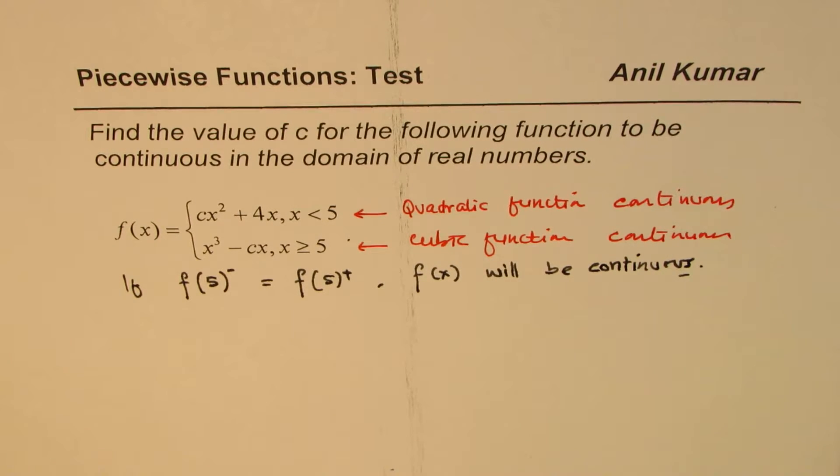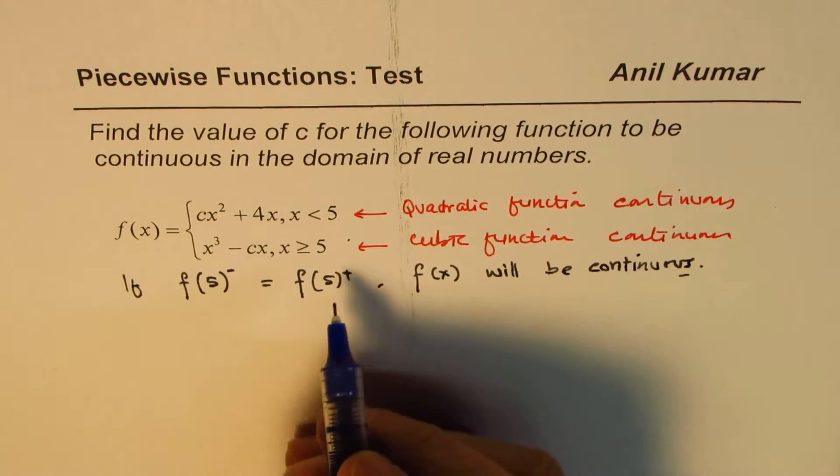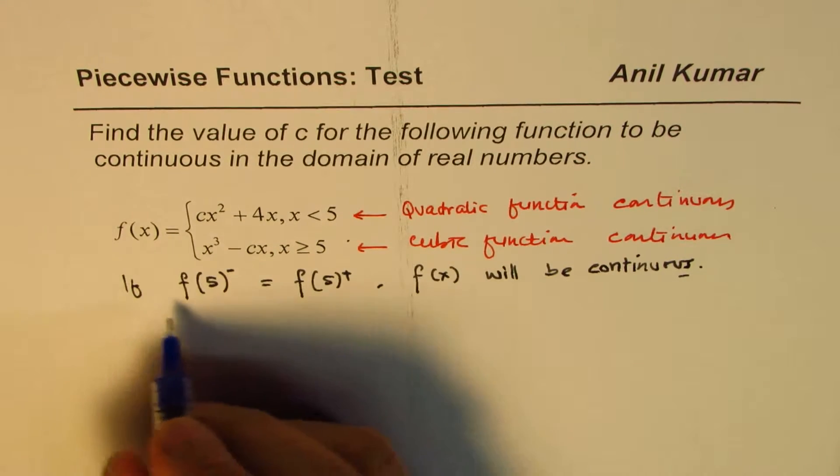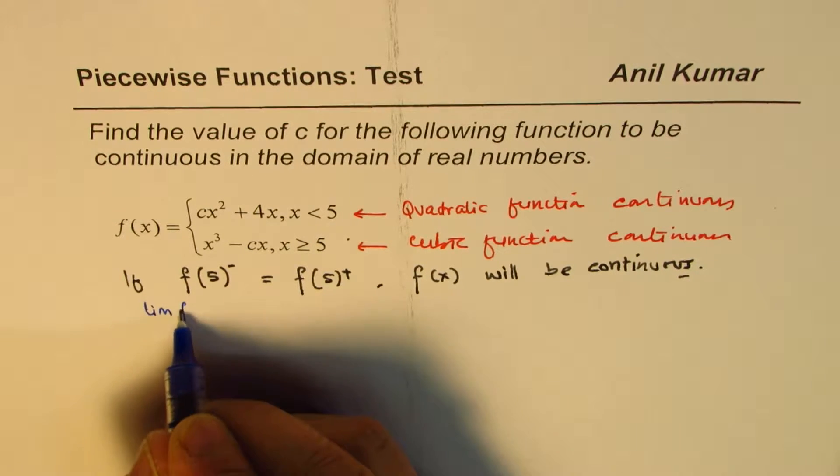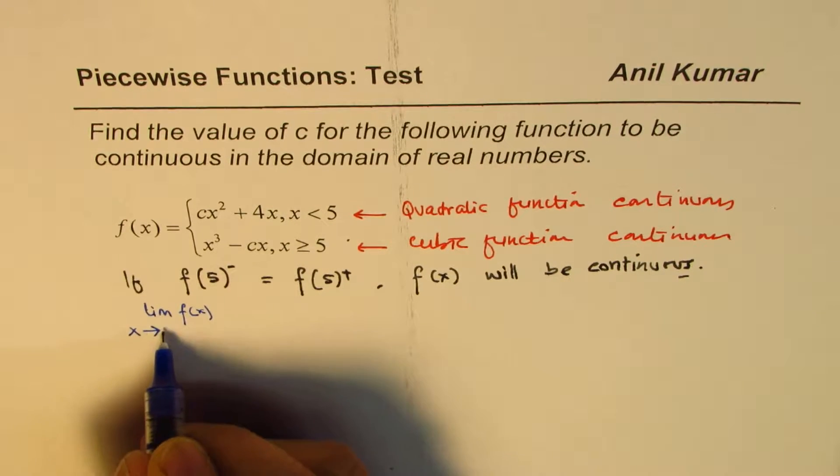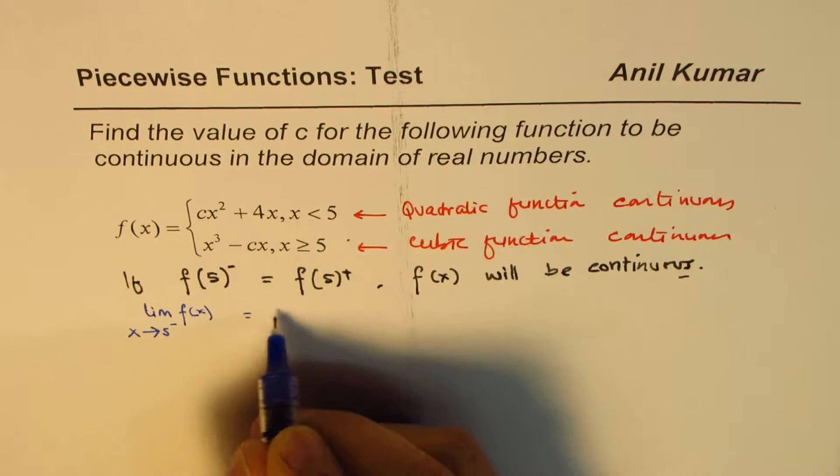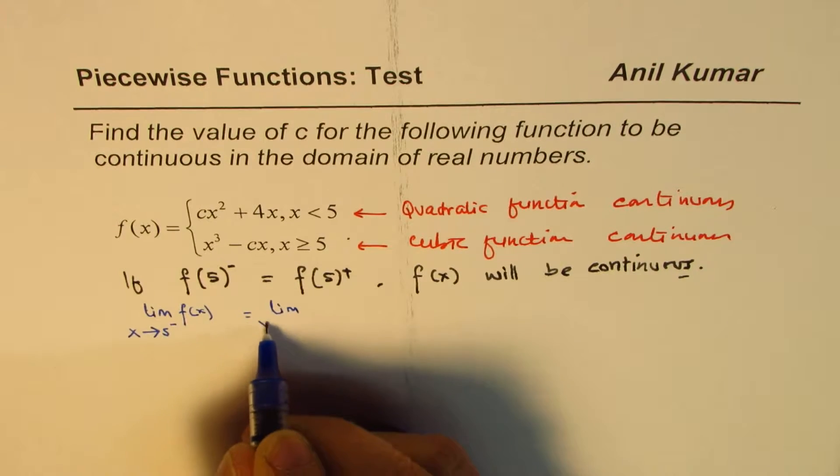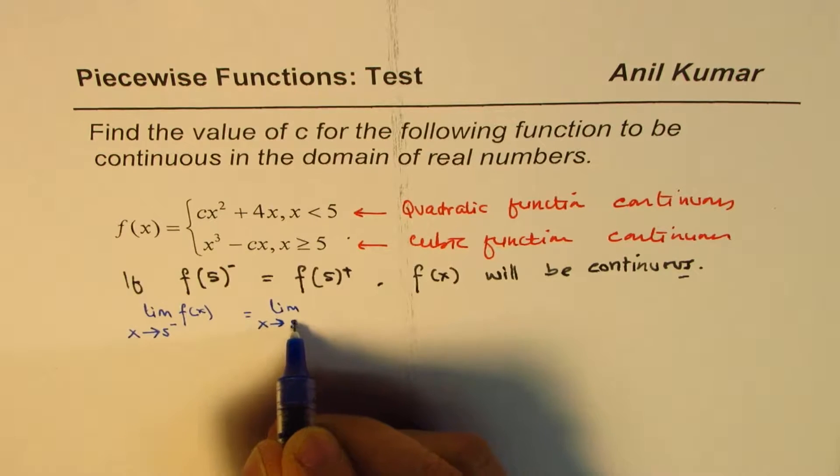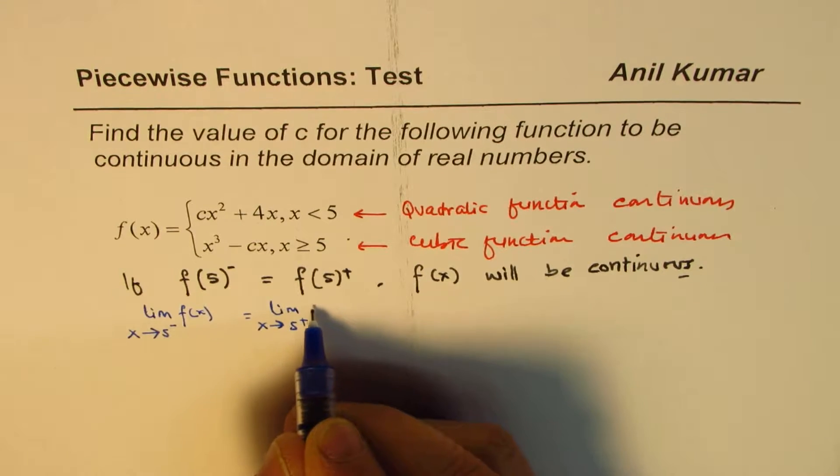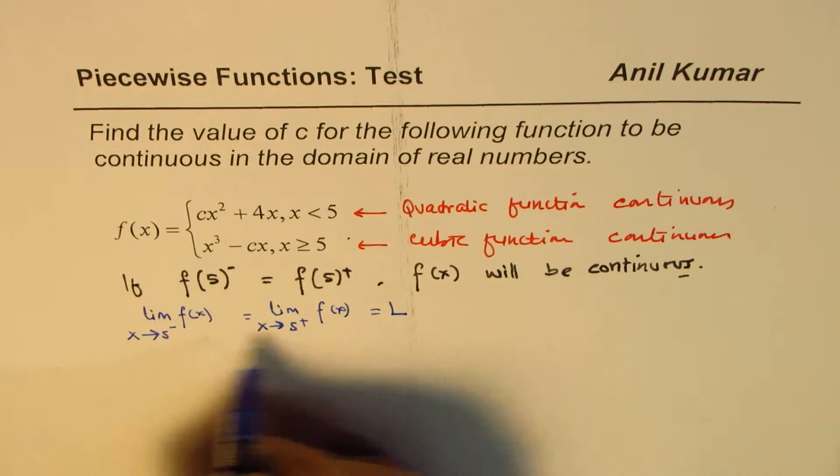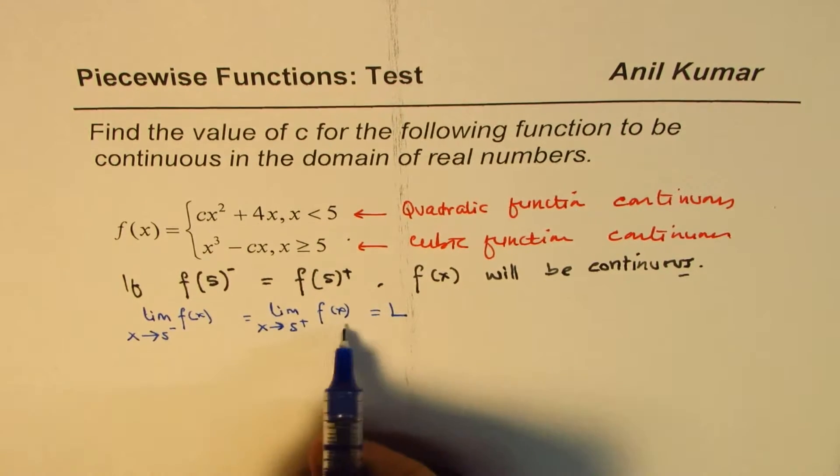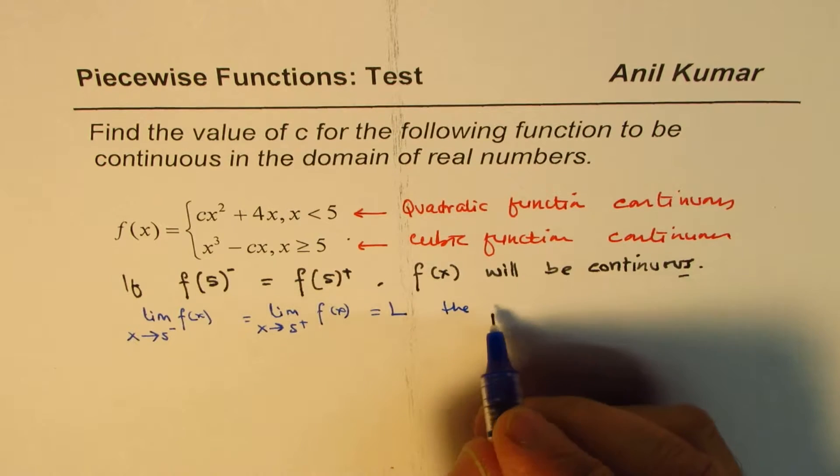Now, those of you who have done the limits part, they will say they could rewrite this as if the limit of function f of x, as x approaches 5 from the left side, is equal to the limit of x approaching from the right side of 5. If these two limits are the same, then the function is continuous.